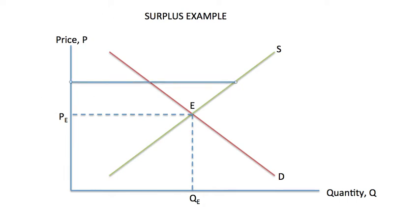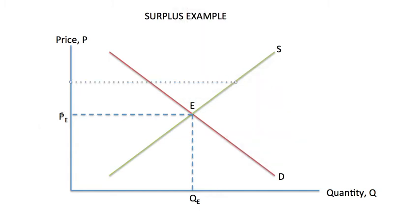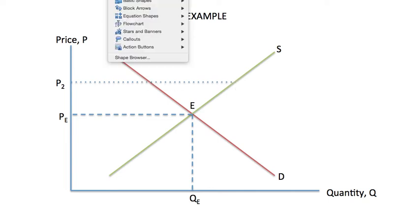The price is here. Let me just dash this good and let's call it P2. Okay, so in this situation, the quantity that is supplied at this price exceeds the quantity that is demanded.